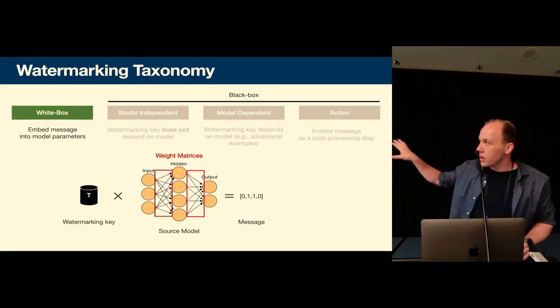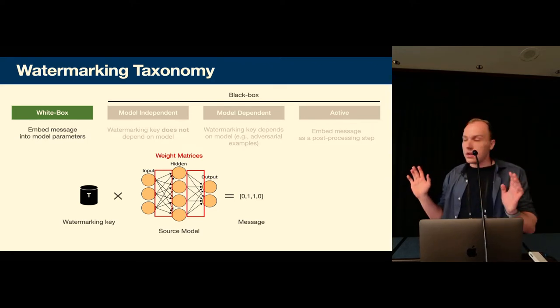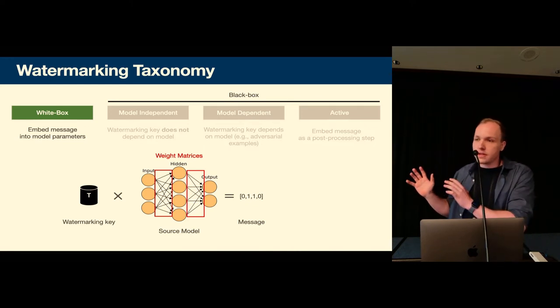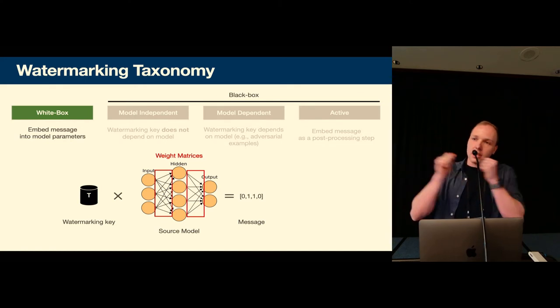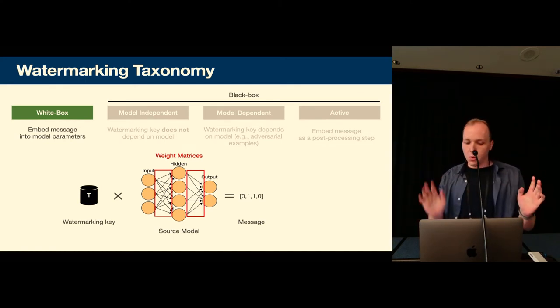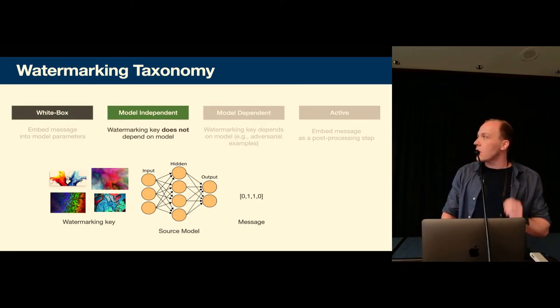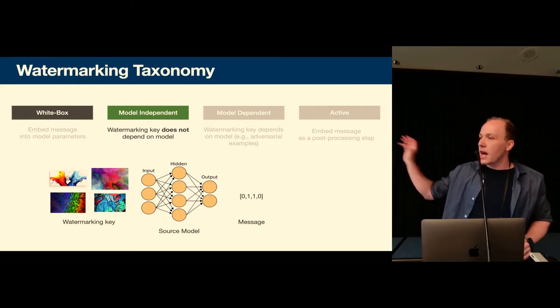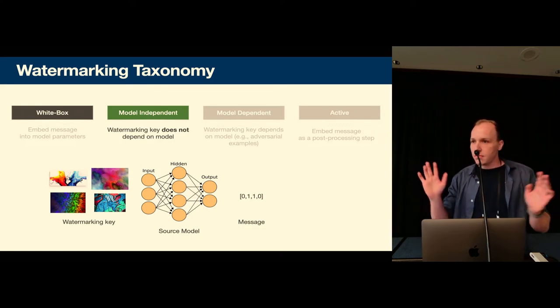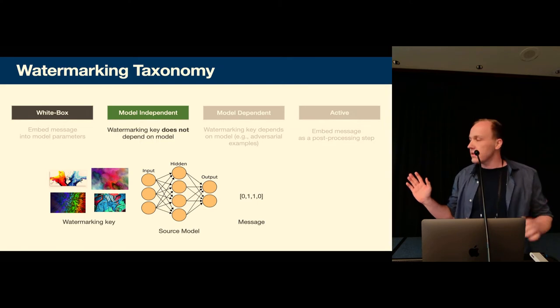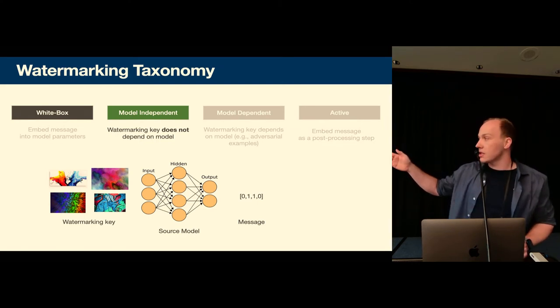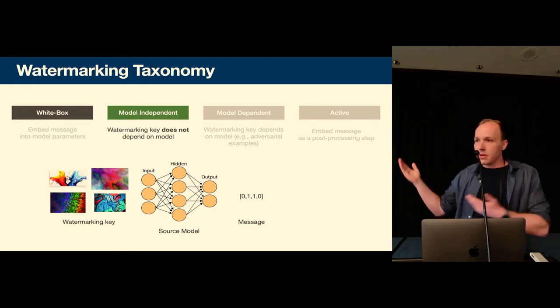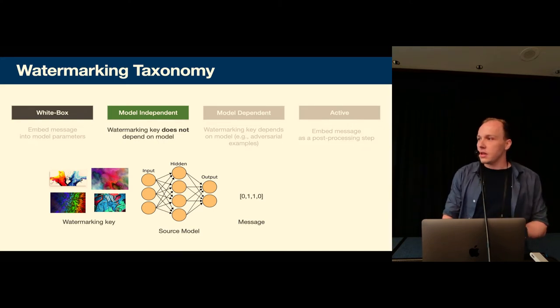The other three watermarking schemes are so-called black box watermarking schemes where the defender to verify only has access to the images and the model as a service. So they would send an image to the model and get the classification of that image back but nothing more. So the first of these black box watermarking schemes we call model independent watermarking. So here the gist is we have a watermarking key which is just some images randomly sampled let's say from the internet, some randomly sampled target labels and we teach the model, we backdoor the model essentially to predict a certain label for each image. If the stolen model predicts the same label we interpret that as a match and we decode that as a one in the message.